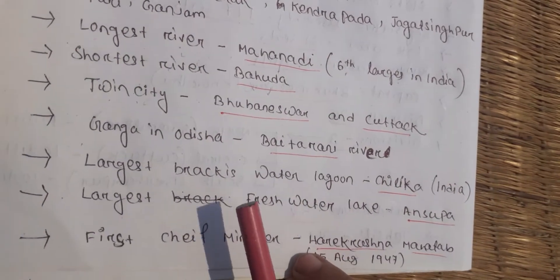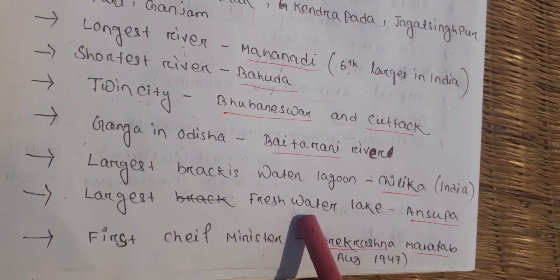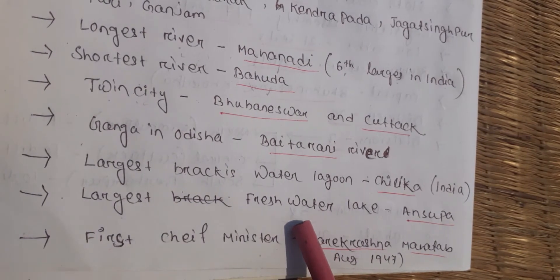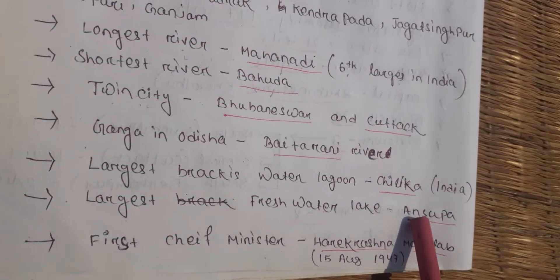The largest freshwater lake of Odisha is Ansupa Lake.